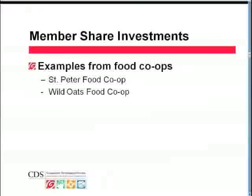We communicated all these changes in our newsletter, with in-store signage, and we had three member forums at the co-op where board members sat at a table in the evening and member-owners could sit down and discuss whatever they wanted. We made a huge effort to communicate all these changes to the members, and then we had our election — we sent out ballots and they voted on it. The election results came back heavily in favor of these changes, which was exciting because then we knew which way to proceed.